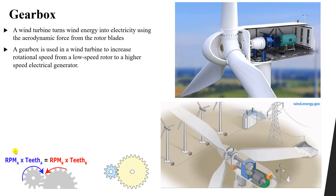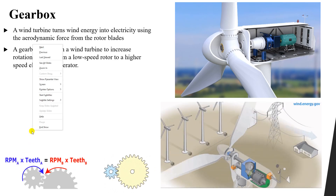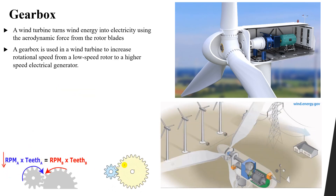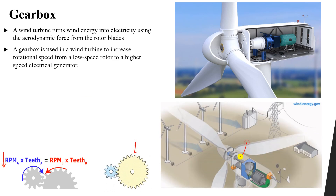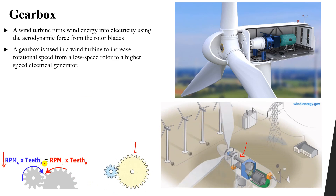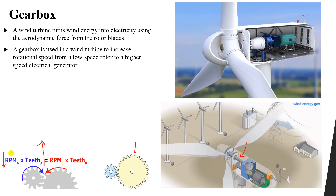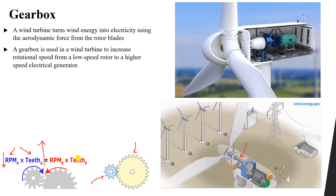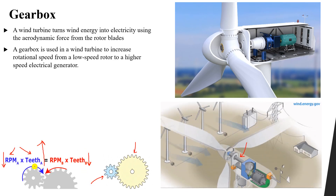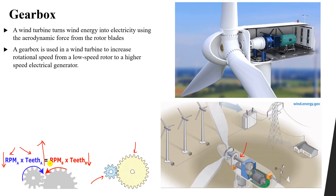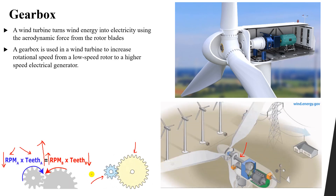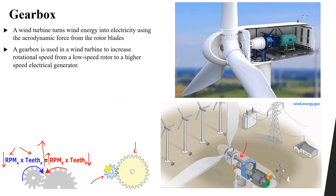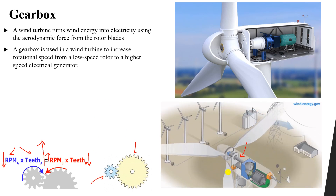The first gear has a low speed and a large number of teeth. So a small value multiplied by a large value equals the second gear side. The second gear has a small number of teeth, so in order for both sides to be equal, we need a large speed. As you can see, this converts from low speed into large speed — this is the function of the gearbox.